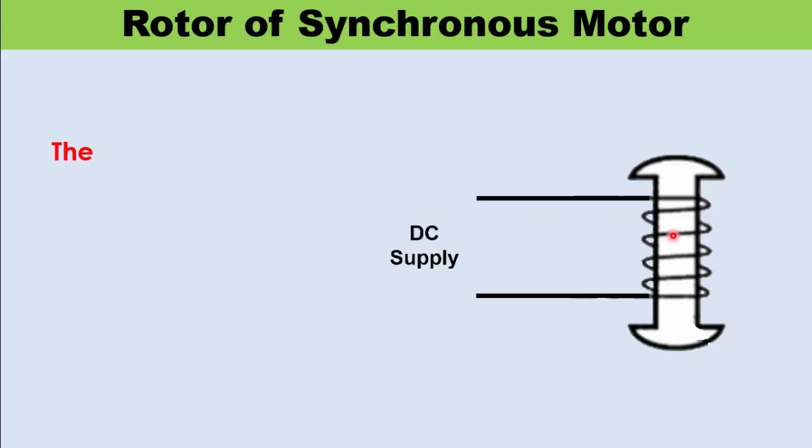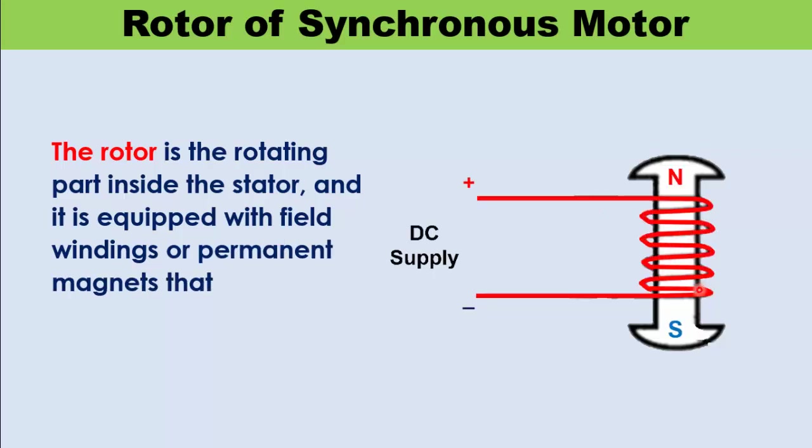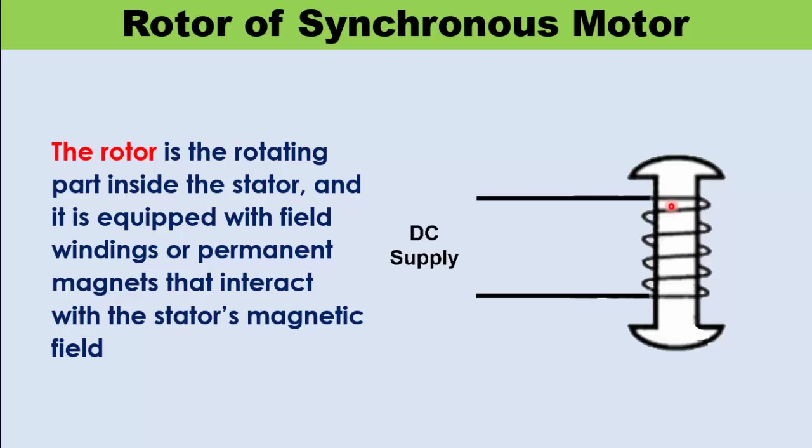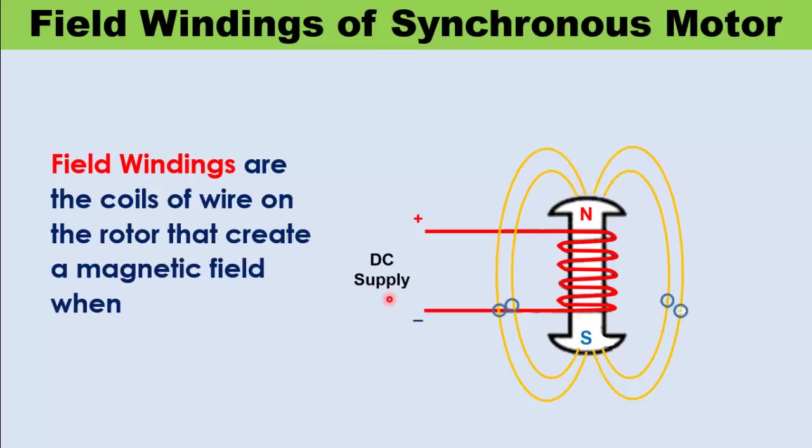The rotor is the rotating part inside the stator, and it is equipped with field windings or permanent magnets that interact with the stator's magnetic field. Field windings are the coils of wire wound on the rotor and energized with DC supply. The field creates a magnetic field when DC current flows through it, which interacts with the rotating magnetic field of stator.